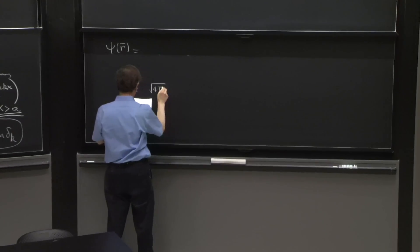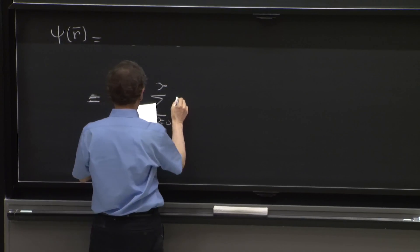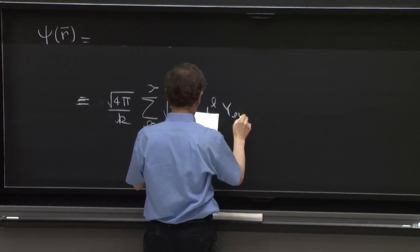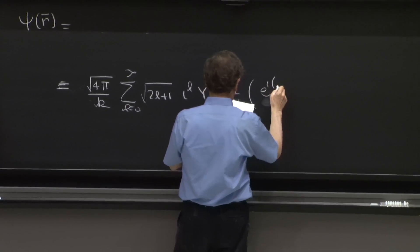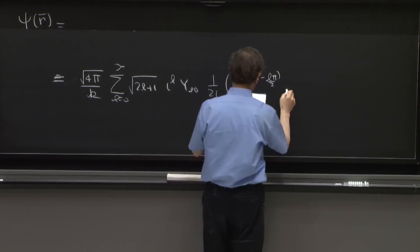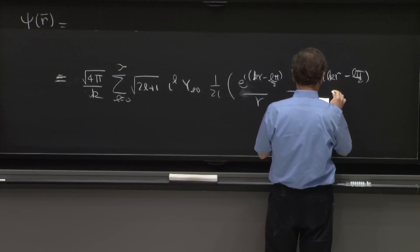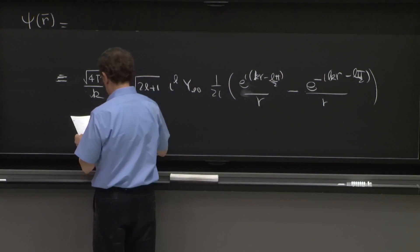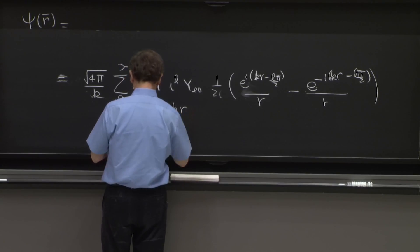Square root of 4π over k, sum of l equals 0 to infinity, square root of 2l plus 1, i to the l, Y_l0, 1 over 2i, e to the i(kr minus lπ/2) over r minus e to the minus i(kr minus lπ/2) over r plus f of k of theta e to the ikr over r.